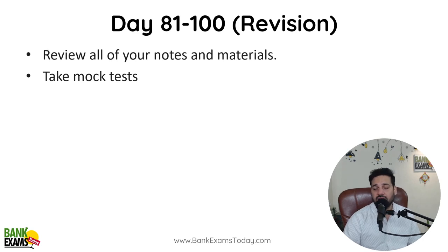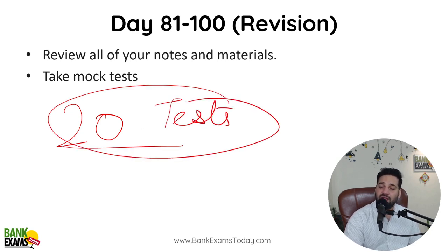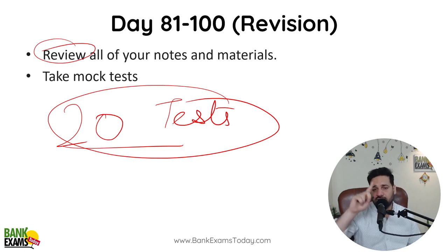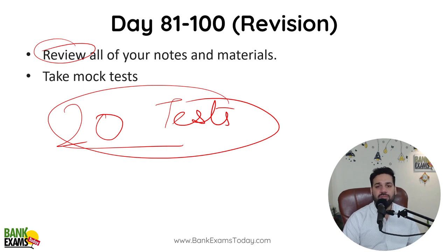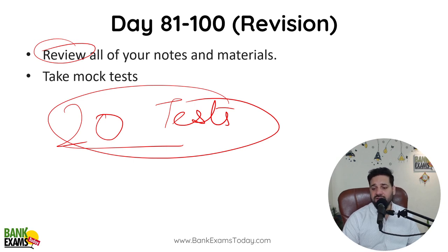From day 81 to day 100, do 20 full-length mock tests — one per day — plus revision. This is a 100-day plan. An average student starting today has a bright chance of final selection. But if you are preparing for only 20-25-30 days, there is very little chance. Even a brilliant student with only 20 days of preparation will find it very difficult. Exceptions exist — if you have already cracked IBPS PO or RRB Scale 1 — but otherwise it is very difficult.